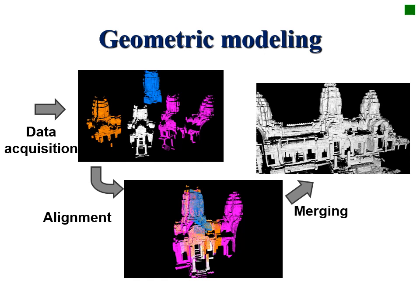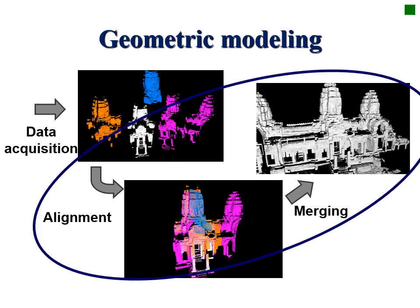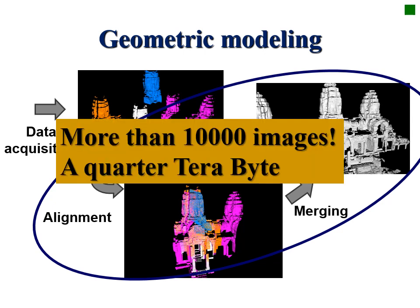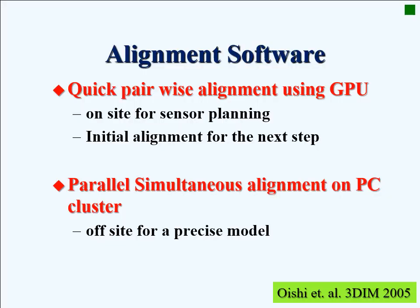Obtained data should be connected because each dataset covers only a limited area. Since the data is large, the design of software is another technical challenge. We prepared a two-step algorithm: a quick pairwise algorithm and a precise parallel algorithm running on the supercomputer. The resulting data represents a 150m by 150m by 40m temple in 1cm resolution.